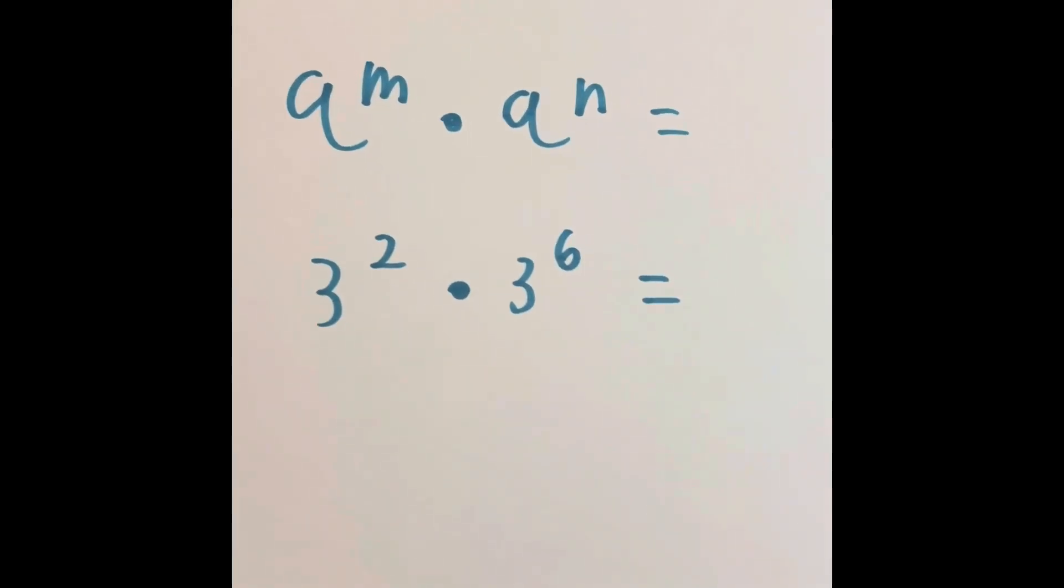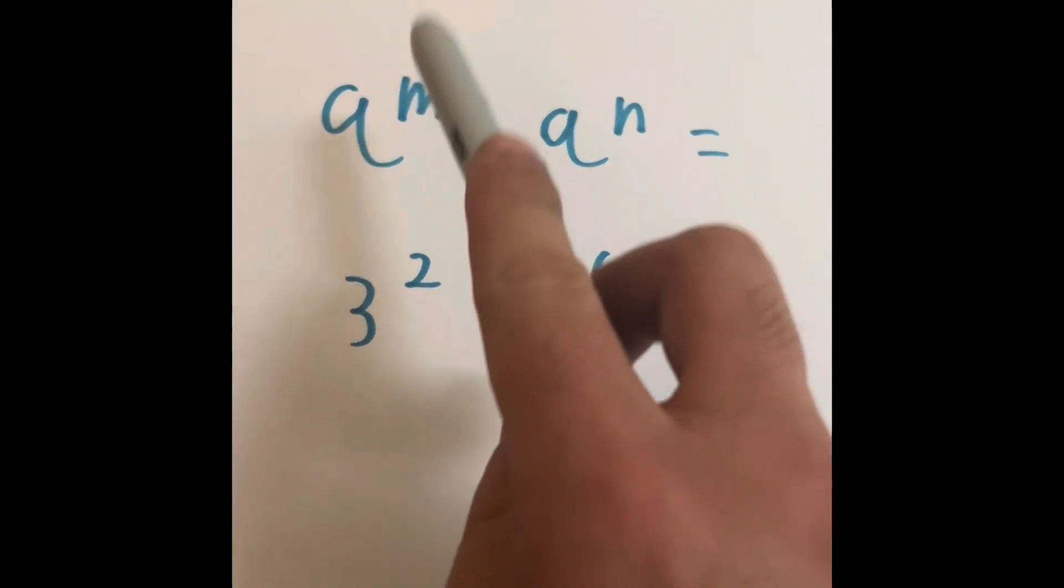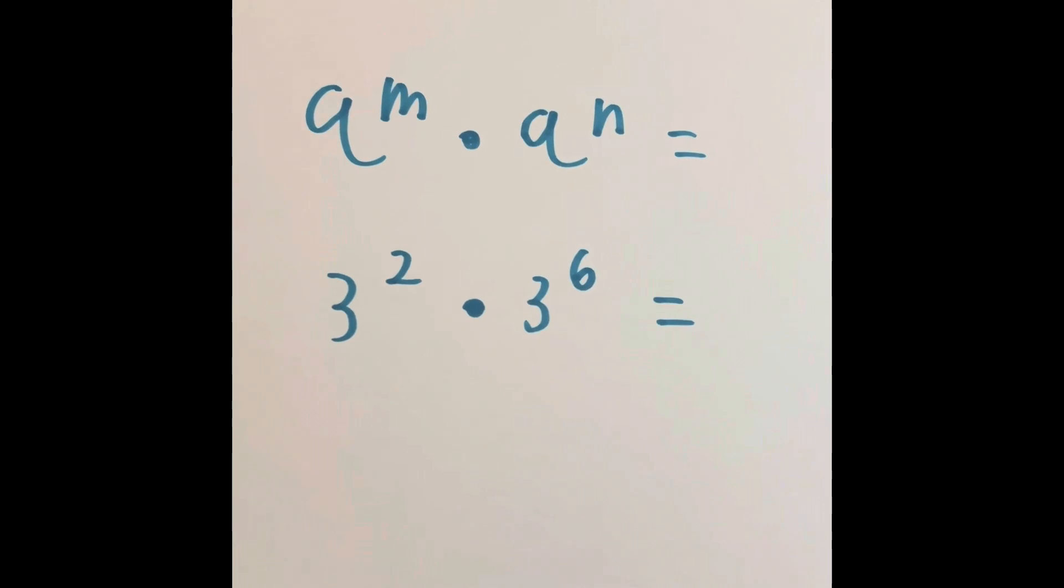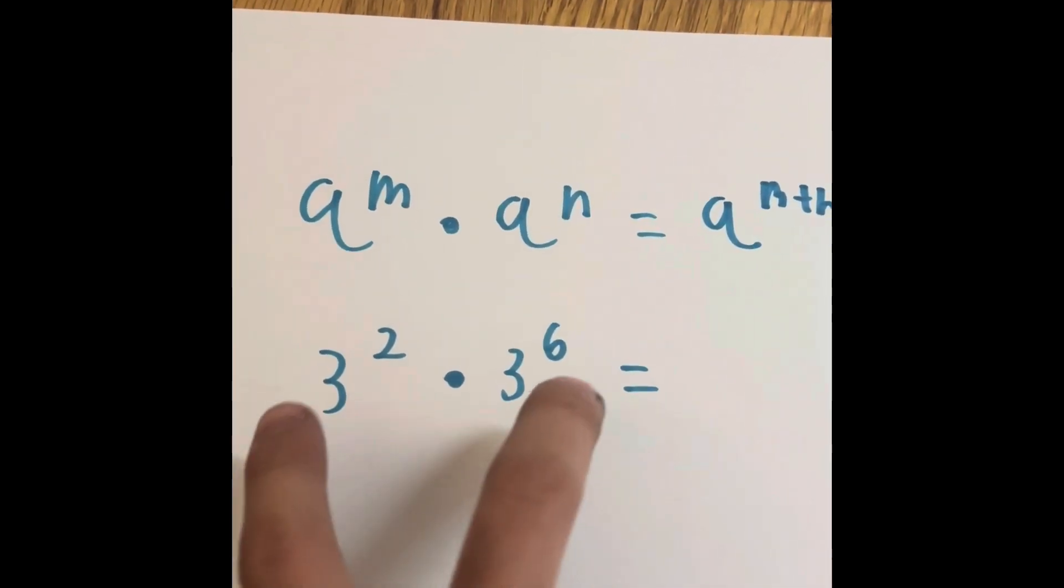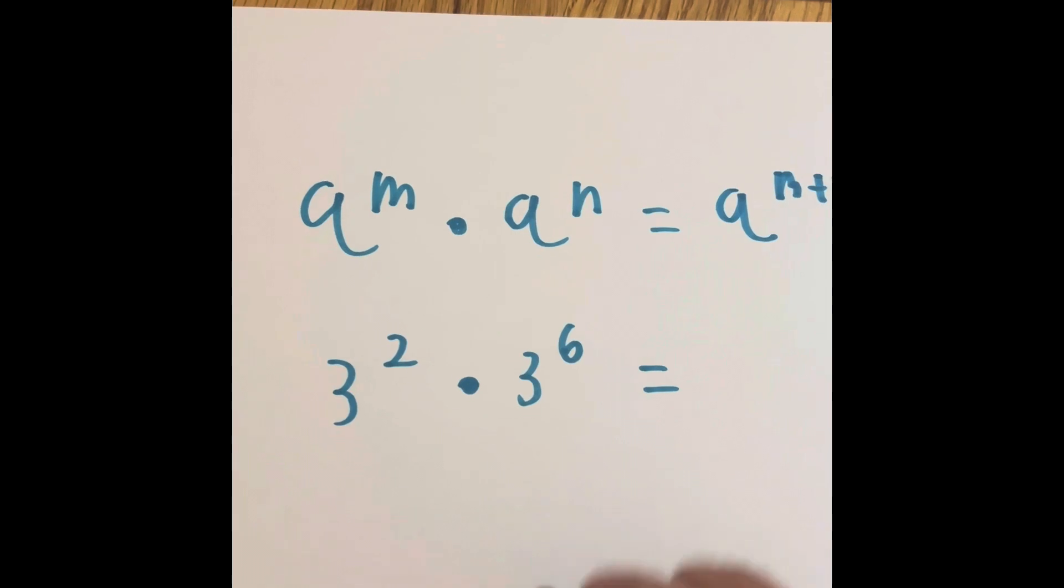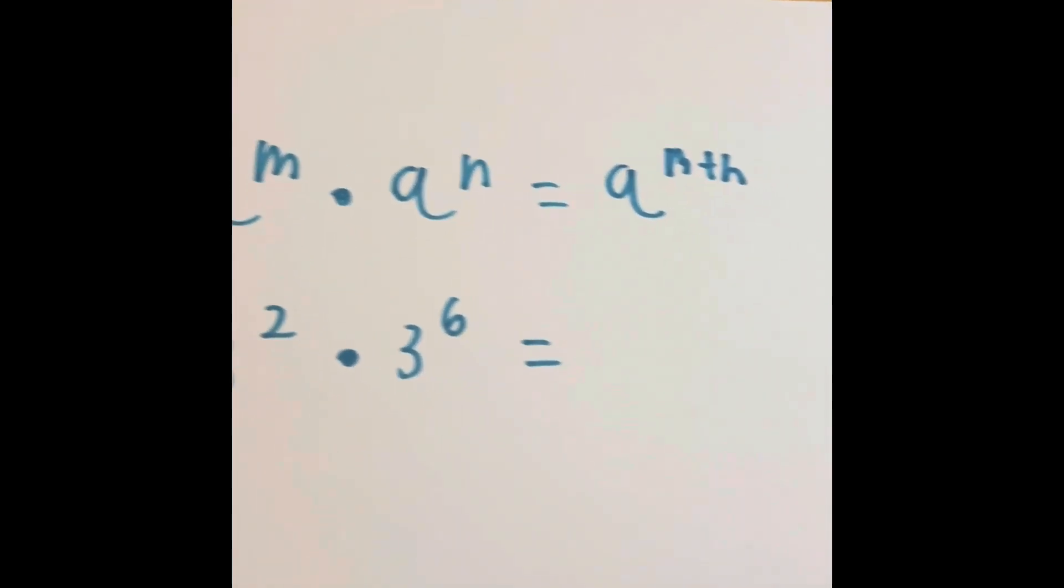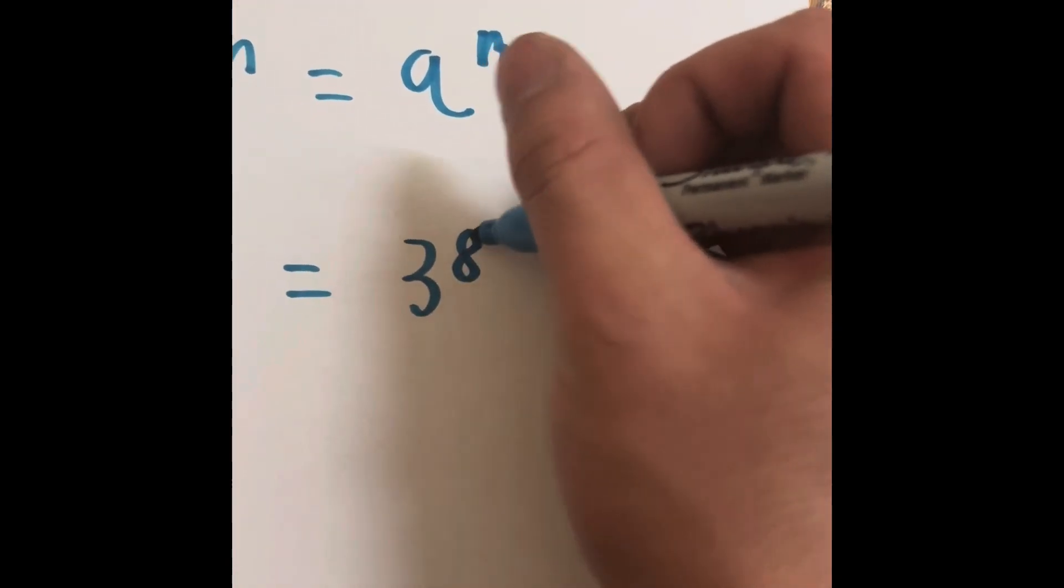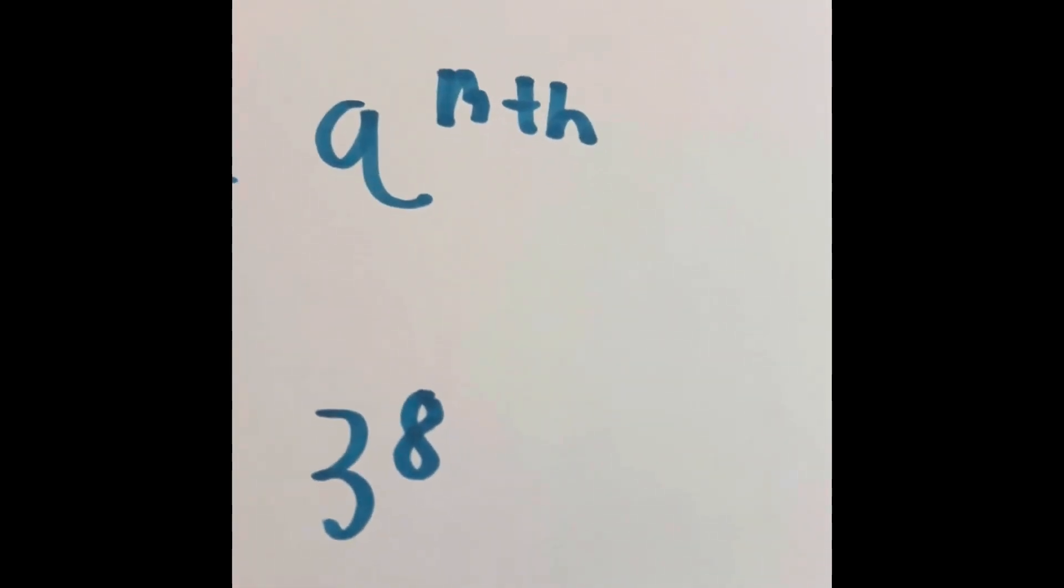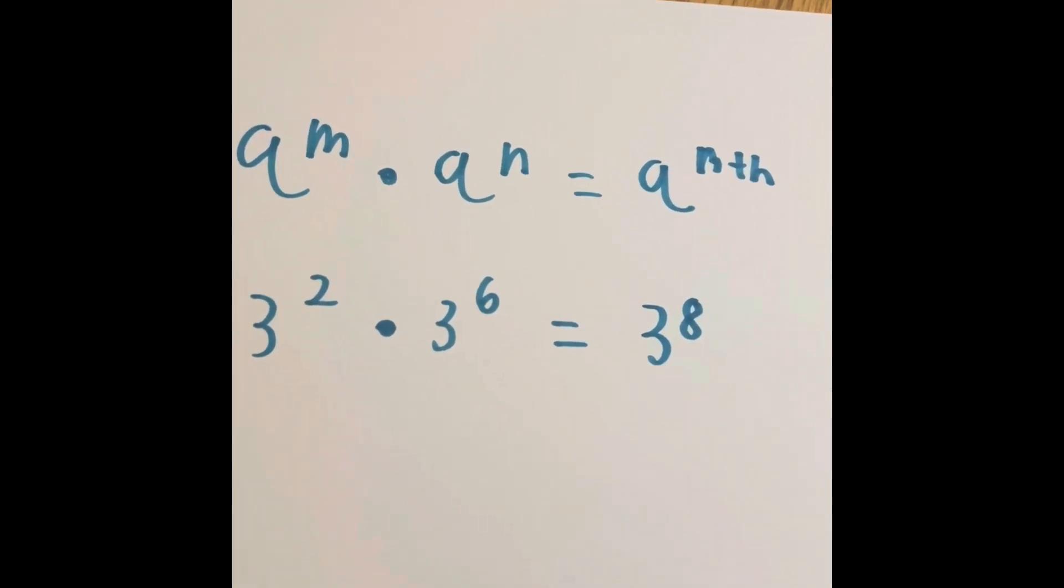Right over here, what happens when you multiply exponents? Well, when you say a^m times a^n, you are going to get a^(m+n). When you multiply exponents and have the same base, what you would have to do is add the exponents together. So 2 and 6, you would add them together. So 2 and 6 would be 8. So, 3 to the 8th. That's why we say a^(m+n). 3 to the power of 8. 2 plus 6 equals 8. Sounds kind of easy, right?